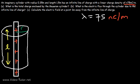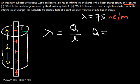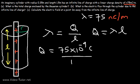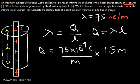Now let's focus on part A: what is the total charge enclosed by the Gaussian cylinder? We know that lambda represents the linear charge density, which is the charge divided by the length. To find the charge enclosed by the cylinder, we rearrange the equation by multiplying both sides by L, so Q equals lambda times L. We use 75 nanocoulombs per meter times 1.5 meters — only the portion of the line enclosed by the Gaussian cylinder matters.